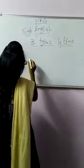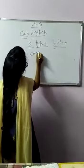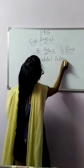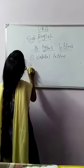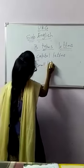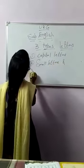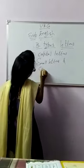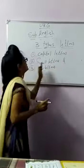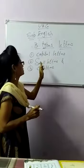What is the first one? Capital letters. And the second one? Small letters. And the third one? Pair letters. So these are the 3 types of letters: capital letters, small letters, and pair letters.